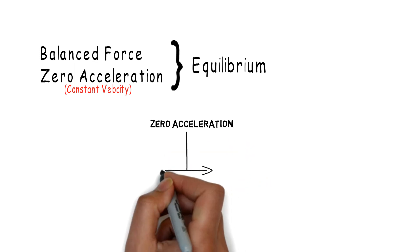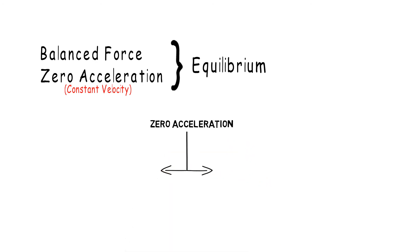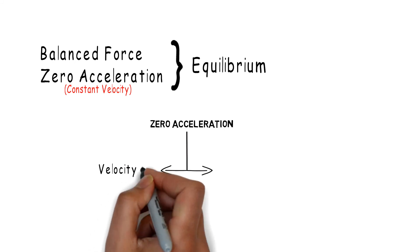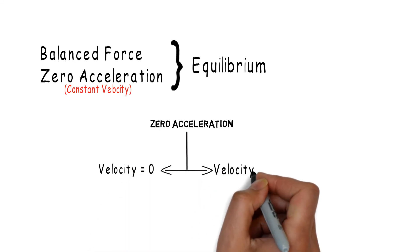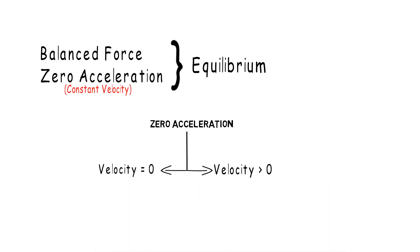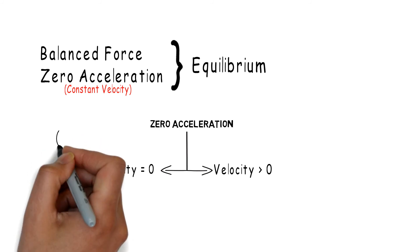Equilibrium not only includes the bodies at rest, but also bodies in a constant velocity. To avoid confusion, the two classifications are used: static and dynamic equilibrium.